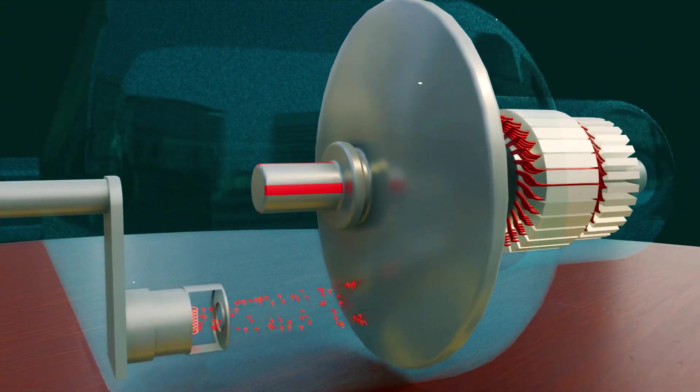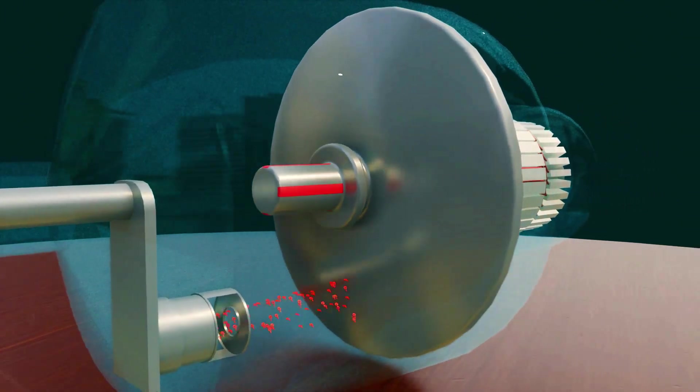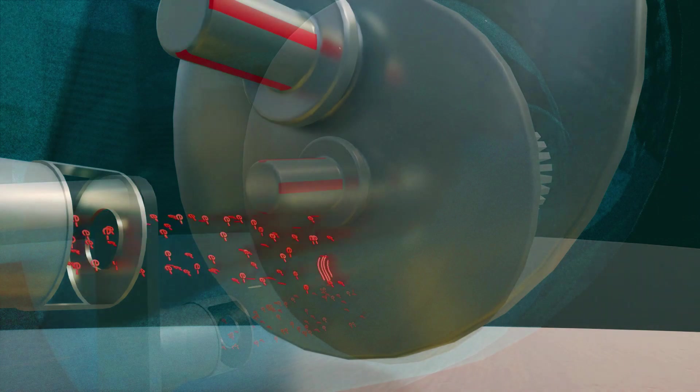At the anode, there is a disc, typically made of tungsten or molybdenum. When high-speed electrons collide with this disc, X-rays are generated.